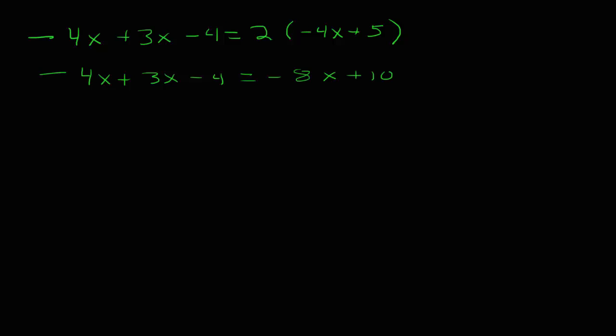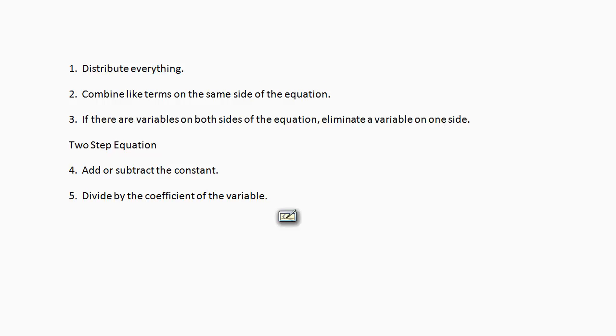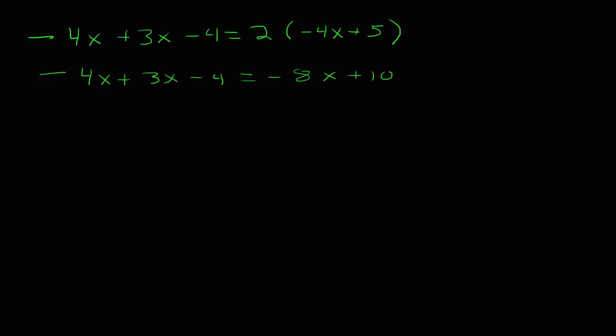Let's take a look at what we're supposed to do next. Our next step says combine like terms on the same side of the equation. At this point, the only like terms that we have are the negative 4x and the 3x that are on the same side of the equation. So we will combine those like terms.